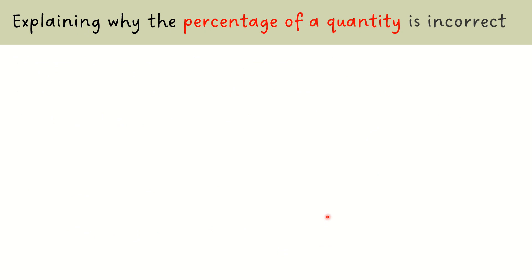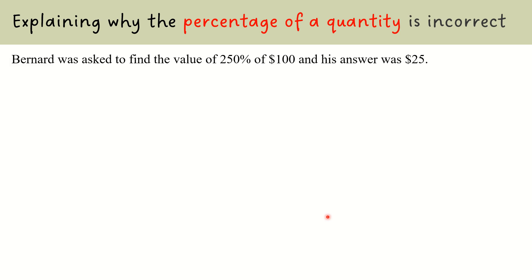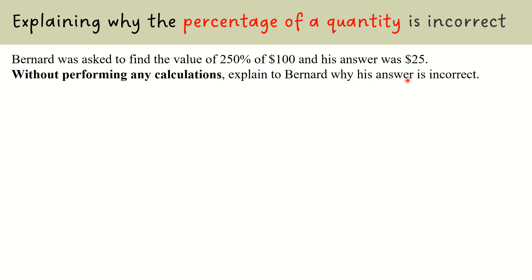Now that we have a better understanding about percentages, we need to be able to tell at a glance whether the percentage of a quantity may or may not be correct. Bernard was asked to find 250% of $100 and his answer was apparently $25. By looking at this statement, we ask ourselves: does this make sense? Without performing any calculations, we want to explain to Bernard why his answer is incorrect.